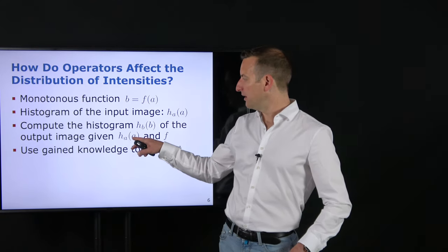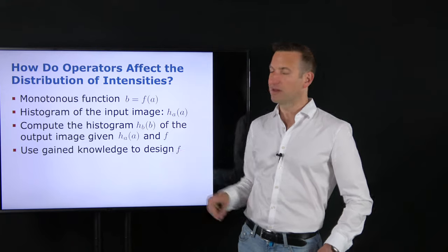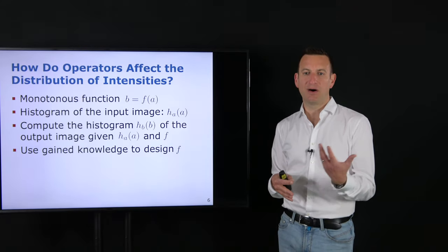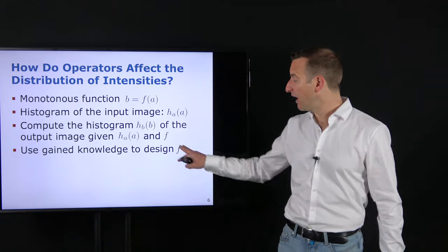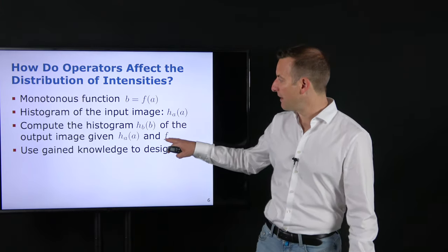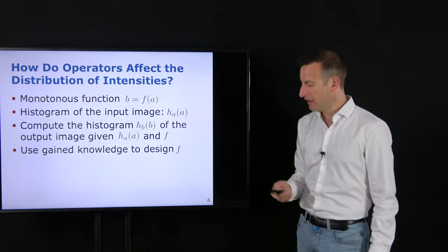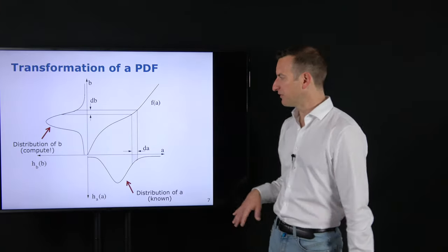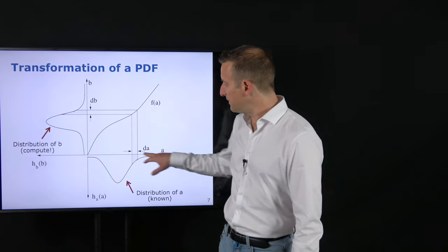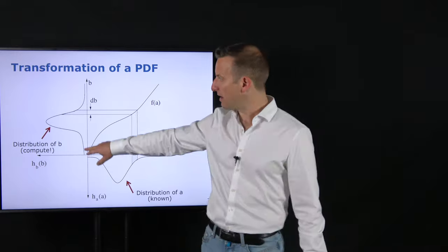We restrict ourselves to monotonous functions F — increasing from 0 to 255 — so a monotonously increasing function. We have an input intensity value A mapped to an output intensity value B. HA denotes the histogram of the input image queried at input intensity A, and HB is the output histogram queried at output value B. HB is computed from HA through the transformation function F. For this, it's useful to look at a specific graphical representation with input intensity values on one axis and output intensity values on the other.